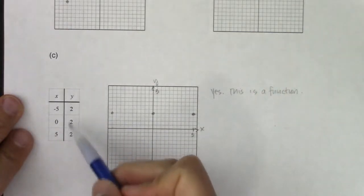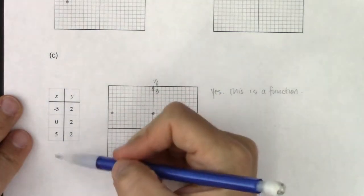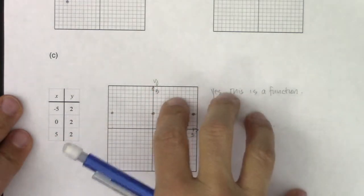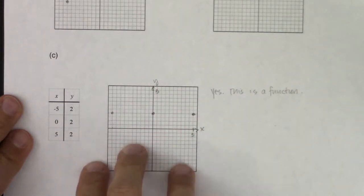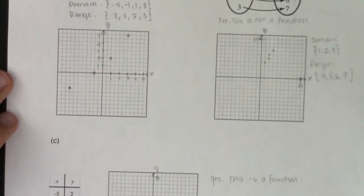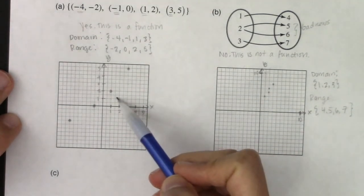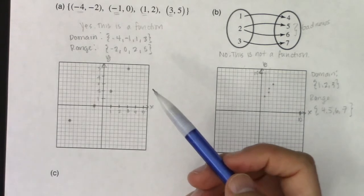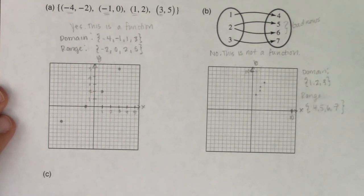It's okay when your y-values repeat — a relation can still be a function. It's not okay when your x-values repeat. Repeated y-values will matter when we classify functions as one-to-one or not one-to-one. Part C is a function but not a one-to-one function, while part A — with no repeated y-values — will turn out to be a one-to-one function. On the next page, we'll apply the vertical line test visually to determine whether graphs are relations or functions.